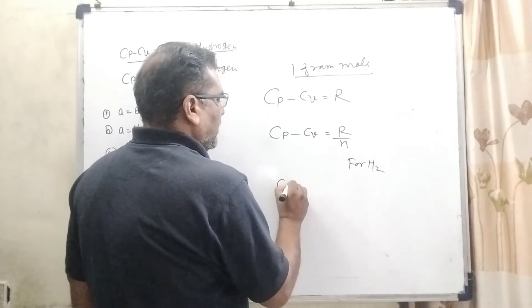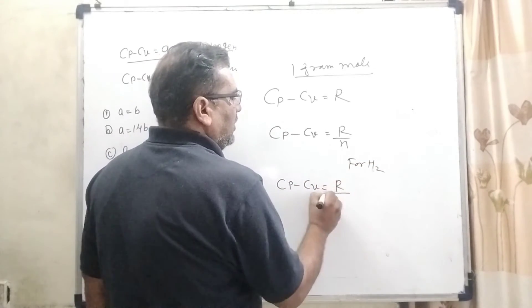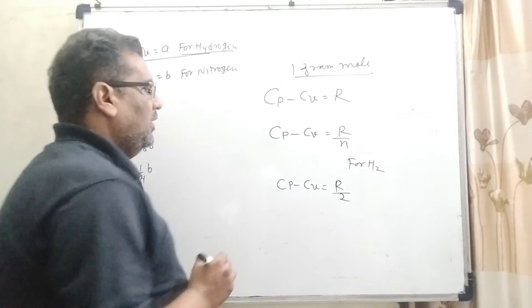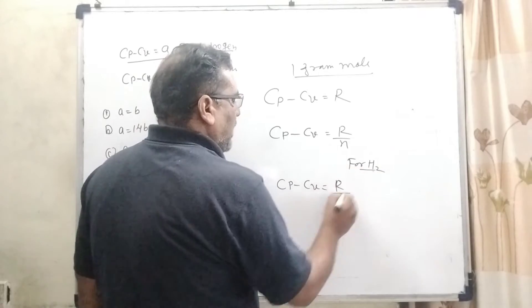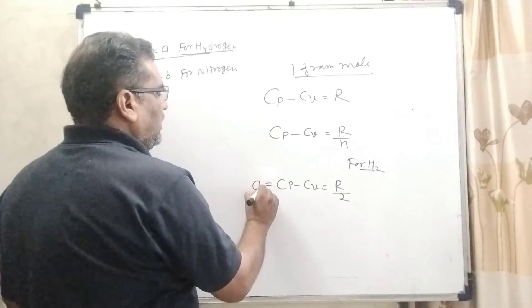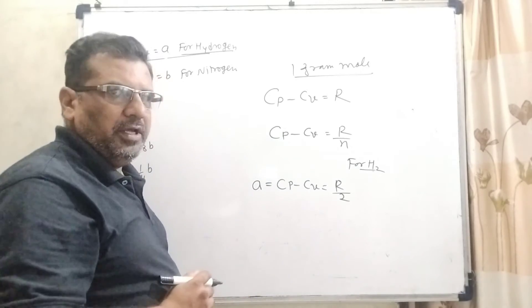And for hydrogen, we can use Cp minus Cv equal to R. And here 1 mole of hydrogen, that is 2. It is for hydrogen. And it is given Cp minus Cv equal to A. So here, according to the question, we have put here A.